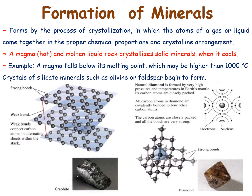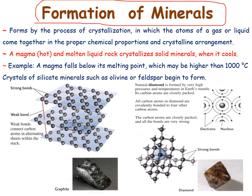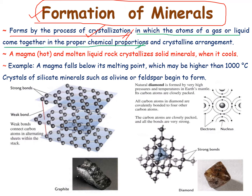If we consider the formation of minerals, it is formed from the process of crystallization. Minerals are formed from the process of crystallization, in which the atoms of a gas or a liquid come together in proper chemical proportion as well as crystal arrangement to give rise to the formation of minerals. Basically, the formation of minerals is called the crystallization process.